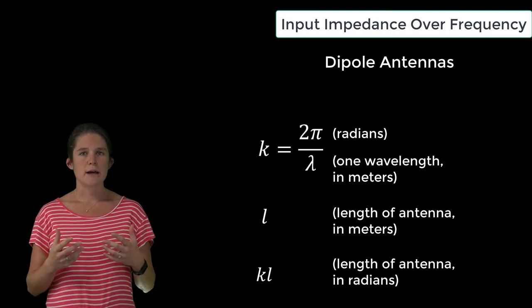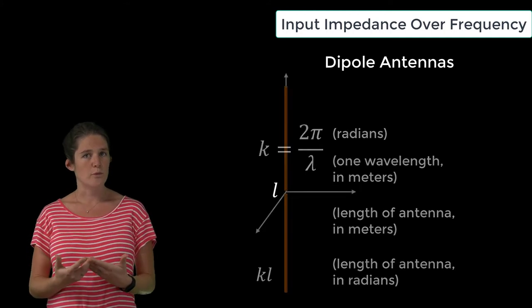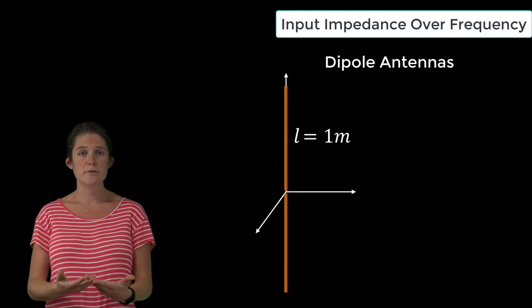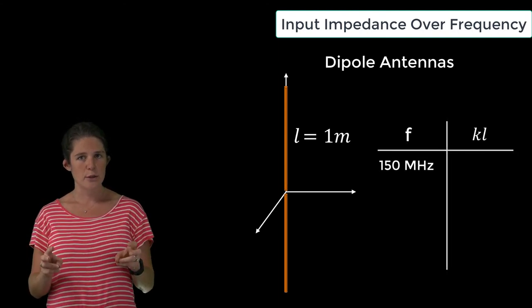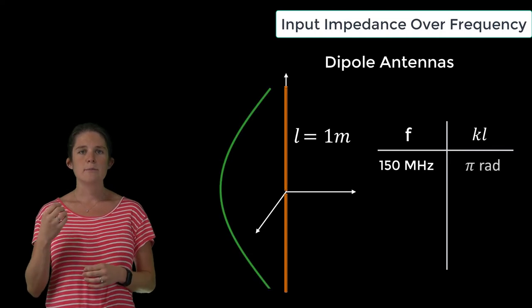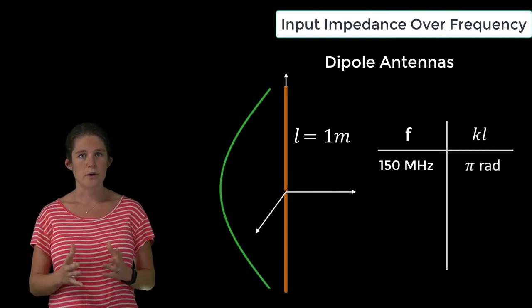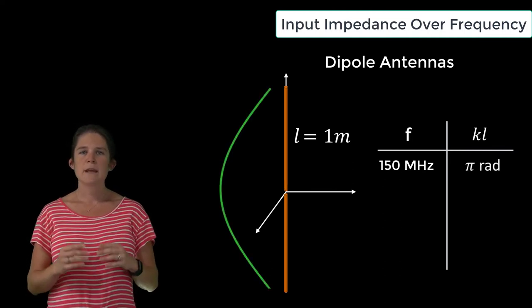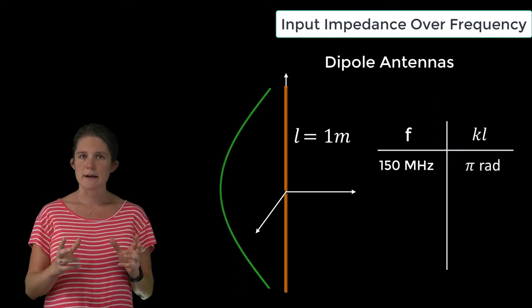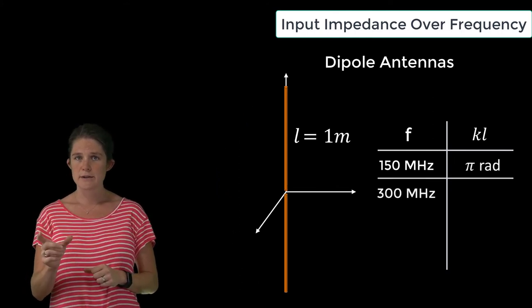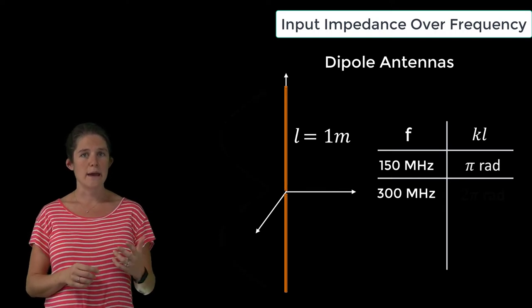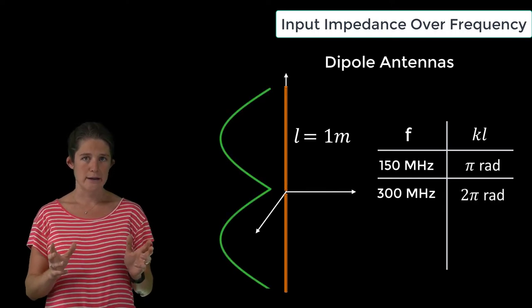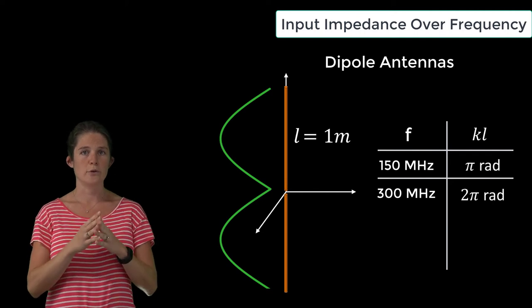So, for example, an antenna with a physical length of 1 meter, if it is driven at 150 megahertz, has an electrical length of π radians, or half a wavelength. If that same 1-meter antenna is driven at 300 megahertz, twice the frequency, it will have an electrical length of 2π radians, or one full wavelength.